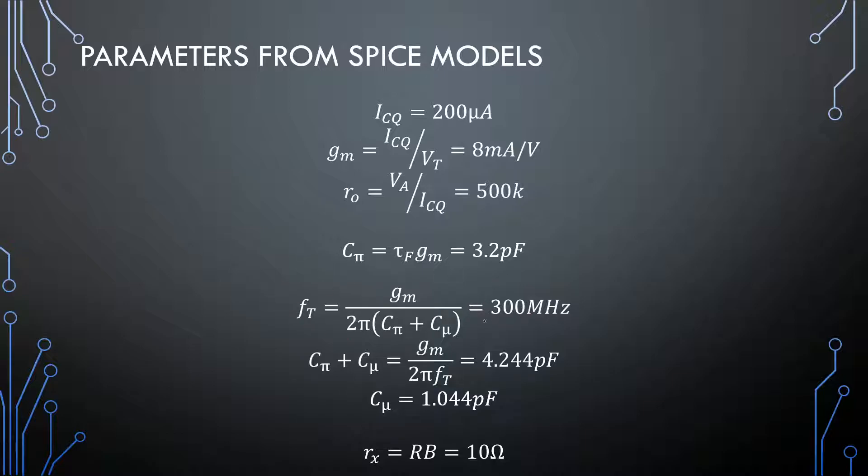Our transition frequency is 300 megahertz. And, we can rewrite this equation to be Cπ plus Cμ is the transconductance over 2π FT. And, that will give us 4.244 picofarad. And, if we subtract the Cπ, we will get the Cμ at 1.044 picofarads. And our base materials is 10 ohms. Quite straightforward. This Cπ, however, is also a bit of approximation. There is more hoops to jump through if you want it exactly. But, this will give you a great idea of your amplifier capabilities. That is how to get some of our small signal model parameters or our high frequency parameters from SPICE models.